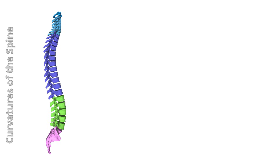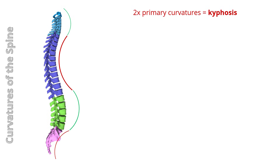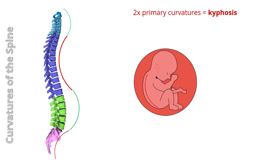Now let's look at spinal curvatures. The spine has four curvatures: cervical, thoracic, lumbar, and sacral. Primary curvatures — thoracic and sacral — are concave anteriorly and termed kyphosis. They result from the flexed fetal position. Thoracic kyphosis extends from T2 to T11 or T12, with a normal angle range from 20 to 50 degrees. Sacral kyphosis, also called the pelvic curve, extends from the lumbosacral junction to the apex of the coccyx.